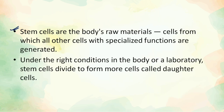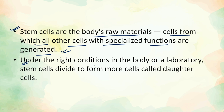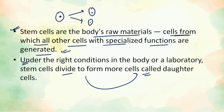We can say that stem cells are the body's raw material — they are the cells from which all other cells with specialized functions are generated. Under the right conditions in the body or in the laboratory, stem cells divide to form more cells called daughter cells. When a single cell divides into two or four cells, depending on which division is occurring, it produces daughter cells.